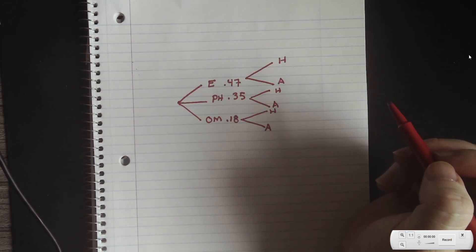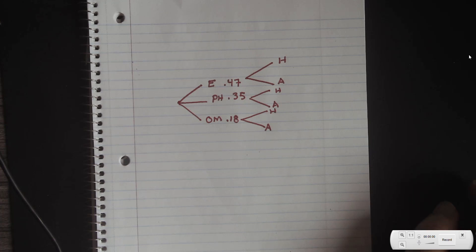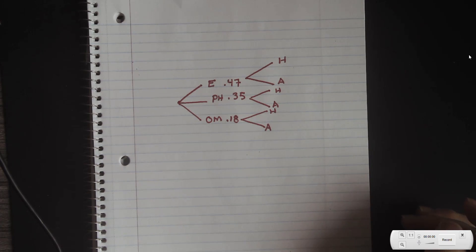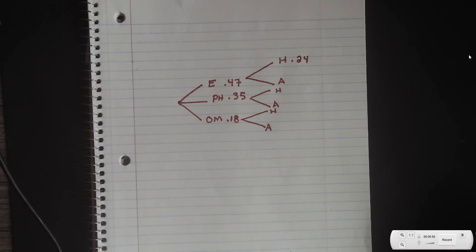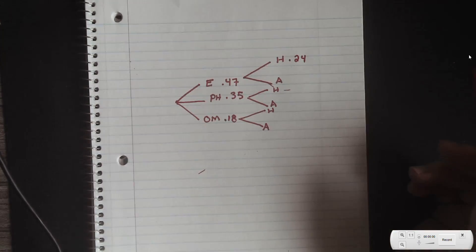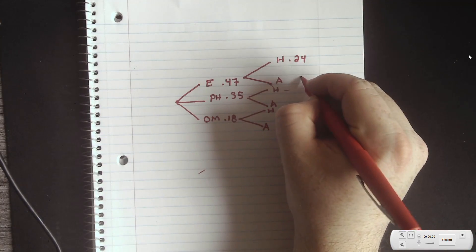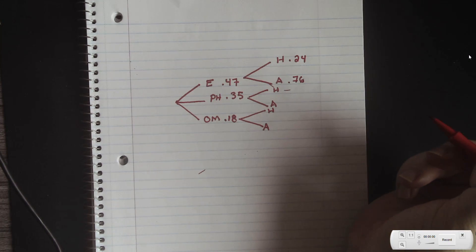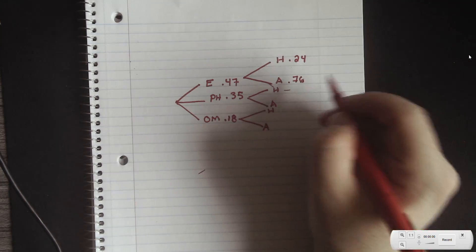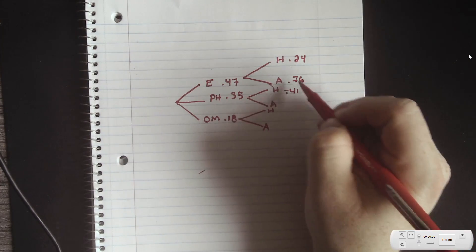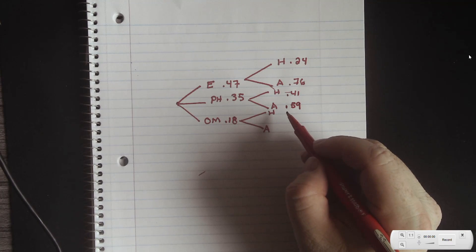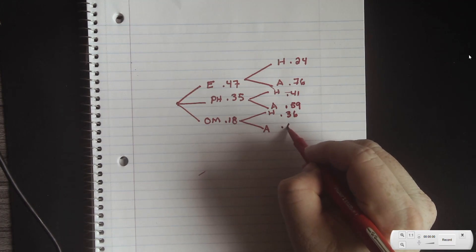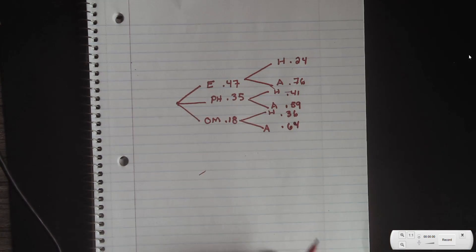Each time we look at each location, the probability of buying a house changes depending on where we are. In Essex, the probability of purchasing a house is 24%, so 0.24, and since these must add to 100%, the apartment probability is 1 minus 0.24 = 0.76. The probability of buying a house in Perry Hall is 0.41, so 1 minus 0.41 = 0.59 for an apartment. For Owings Mills, buying a house is 0.36, and 1 minus 0.36 = 0.64. That's our tree diagram.